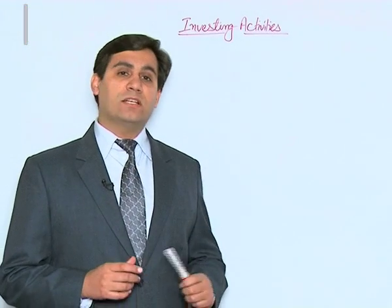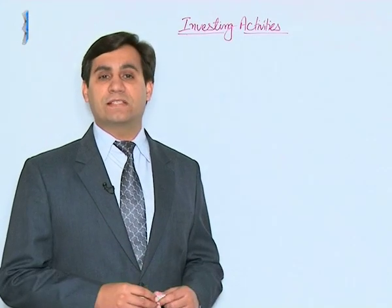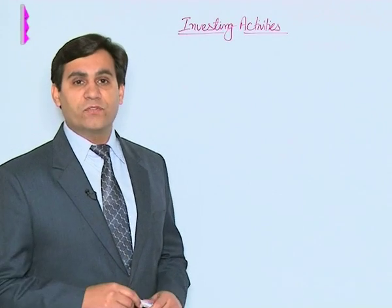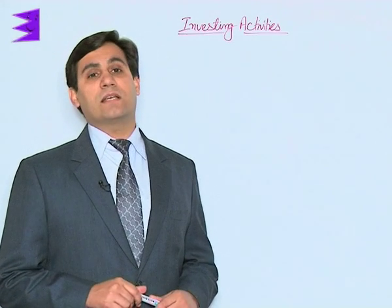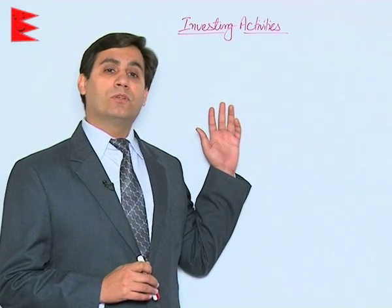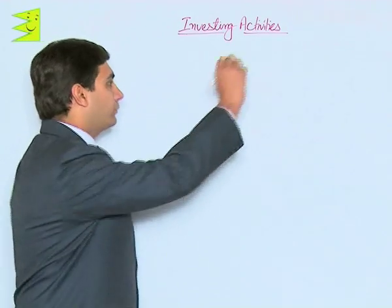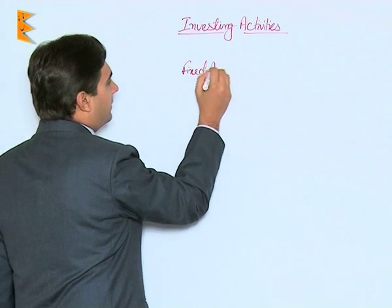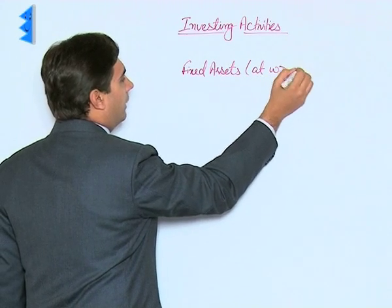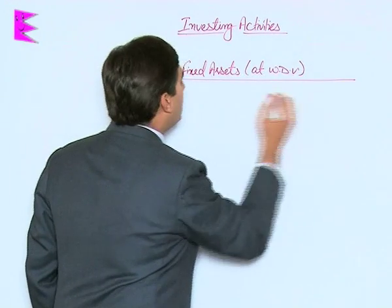Since it involves acquisition and disposal of fixed assets, very often we are required to create accounts of fixed assets so as to calculate their inflow and outflow. The first format we are going to discuss is: if a fixed assets account is required, how do we make it? The format is Fixed Assets Account at Written Down Value — sometimes referred to as at net value. This is a T-shape format.